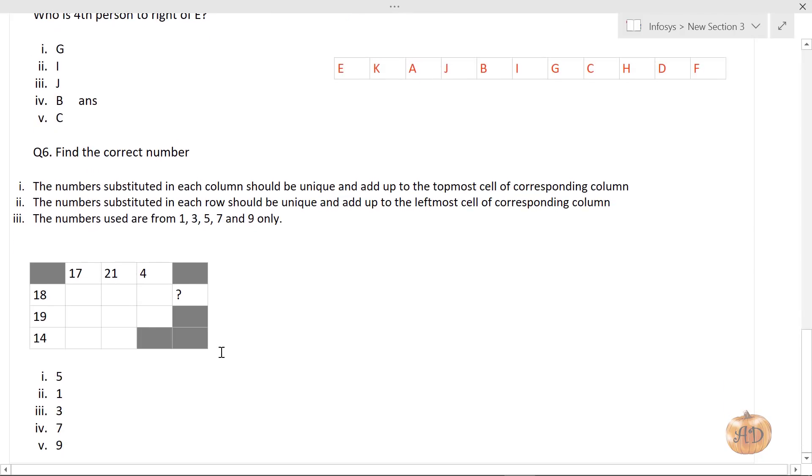Let's move to the last question. This is another puzzle. It says the numbers substituted in each column should be unique and add up to the topmost cell of the corresponding column. If I use 1, 3, 5 in one row, I cannot repeat them - only unique values per row or column. Another condition: numbers used are from 1, 3, 5, 7, and 9 only. We cannot use any other numbers.